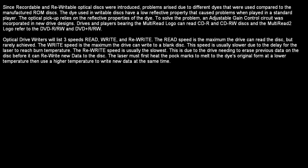Optical drive writers list three speeds: read, write, and rewrite. The read speed is the maximum the drive can read the disc, but it is rarely achieved. The write speed is the maximum the drive can write to a blank disc — usually slower due to the delay for the laser to reach burn temperature. The rewrite speed is usually the slowest, due to the drive needing to erase previous data before writing new data. The laser must first heat the pockmarks to melt the dye back to its original form at a lower temperature, then use a higher temperature to write new data at the same time.